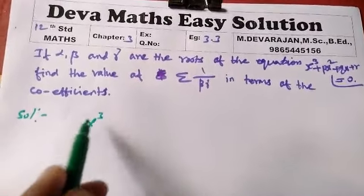Therefore, the sum 1/(beta*gamma) equals b/r. Thanks for watching.